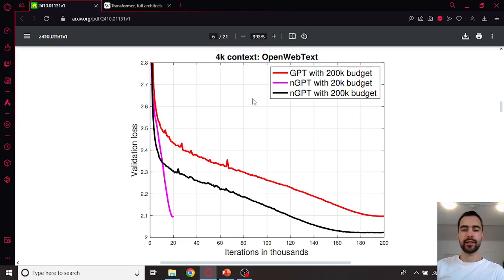So here we can see the results of GPT versus nGPT. Let's look at red and pink line. Red line is the classic GPT with 200,000 iteration training. It achieves this accuracy and the pink line, the nGPT with only 20,000, so 10 times faster, achieves the same accuracy.